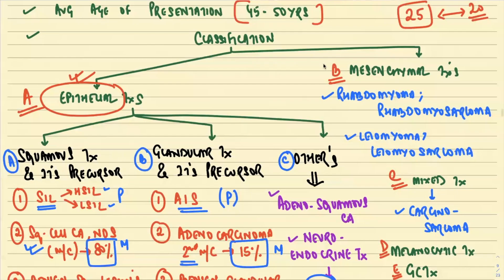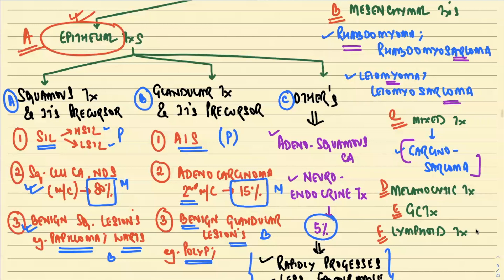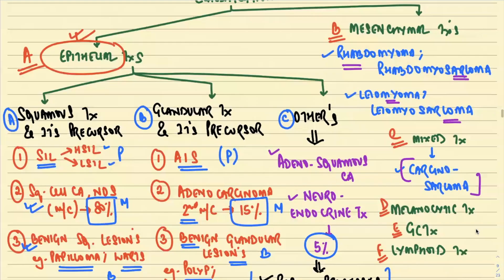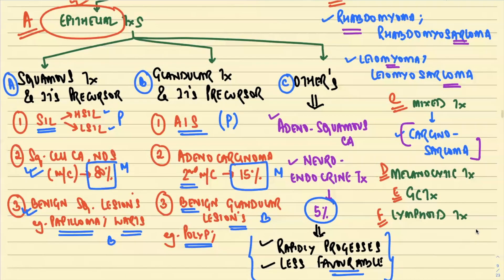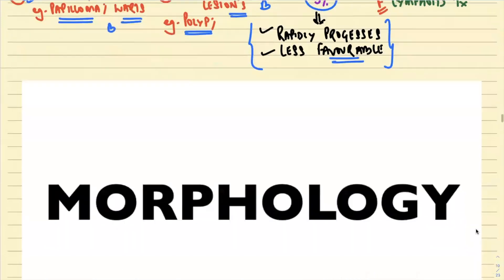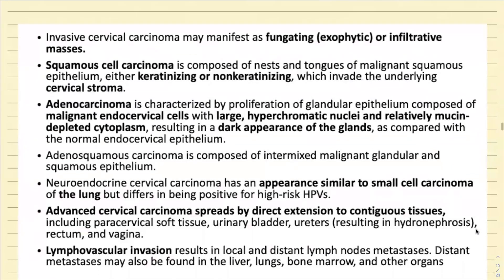The mesenchymal tumors include soft tissue lesions like rhabdomyoma, rhabdomyosarcoma, leiomyoma, and leiomyosarcoma. In mixed tumors, we have carcinosarcoma, where both the epithelial and mesenchymal components are mixed. We can also have melanocytic tumors, germ cell tumors, and lymphoid or lymphoproliferative disorders involving the cervix. Now, regarding morphology — the gross features of cervical carcinoma — invasive cervical carcinoma manifests as a fungating or exophytic growth, and sometimes as an infiltrative mass.